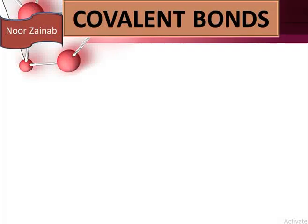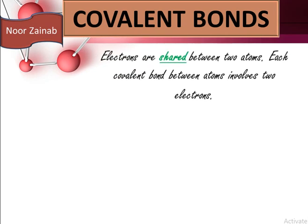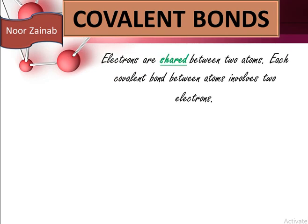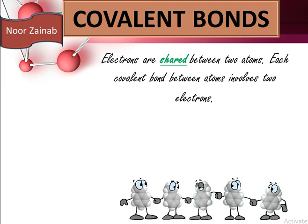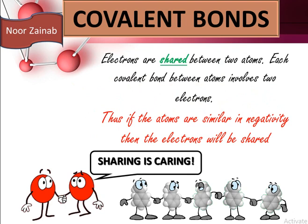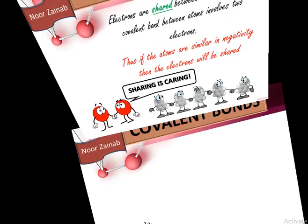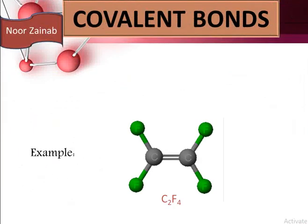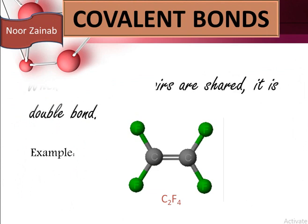During covalent bonds, electrons are shared between two atoms — each covalent bond between atoms involves two electrons. If atoms are similar in electronegativity, electrons will be shared equally. For example in C₂F₄, two electron pairs are shared so it is a double bond.